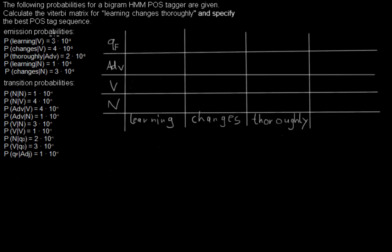Hello. I'd like to show you how to calculate the Viterbi matrix for this given sequence to specify the best part-of-speech tag sequence — the best tagging possibility for this sequence, meaning the one with the highest probability. I will give you the most important facts first and then show you the calculation so you can decide on your own how much detail you need.